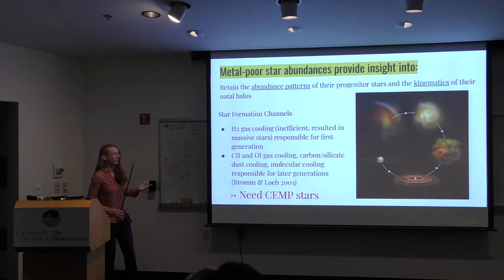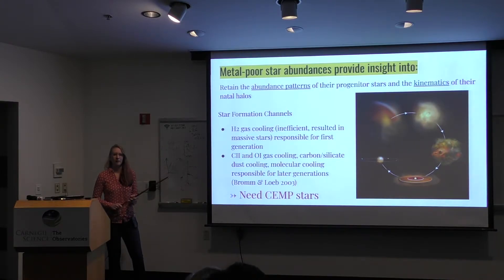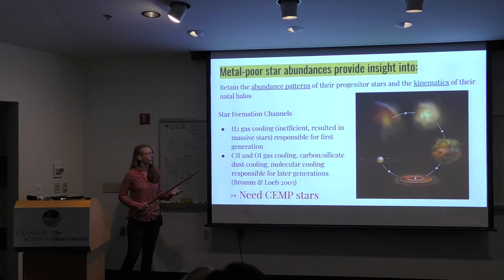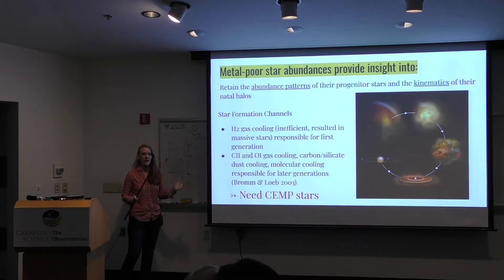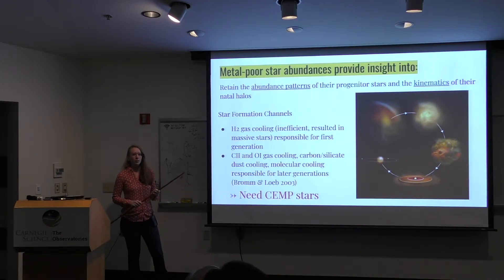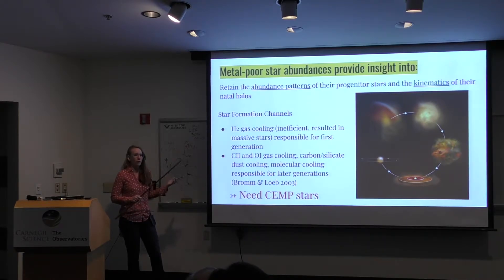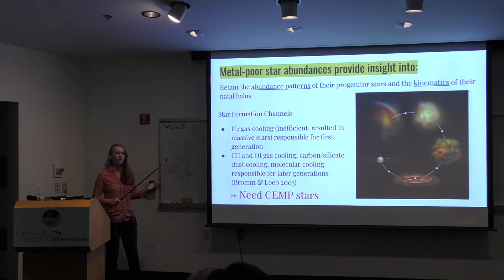What are metal-poor stars good for? The key idea is that they retain the abundances of their progenitor stars and the kinematics of their natal halos. One thing we can explore is star formation channels. The first generation of stars was created by H2 gas cooling, which was very inefficient and resulted in massive stars because fragmentation was so hard. The first-generation stars were prolific producers of carbon and oxygen, and so ionized carbon, oxygen gas cooling, carbon and silicate dust cooling, and molecular cooling were responsible for the second generation and beyond.